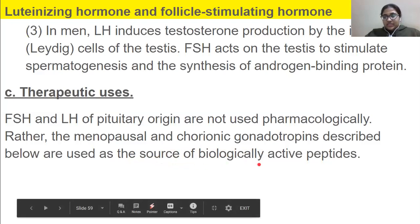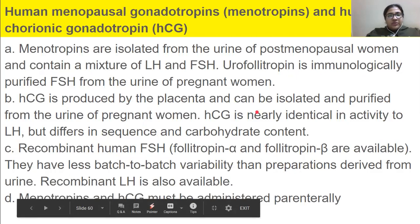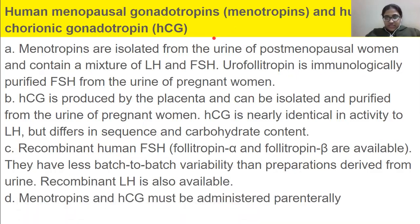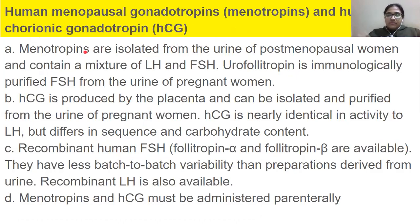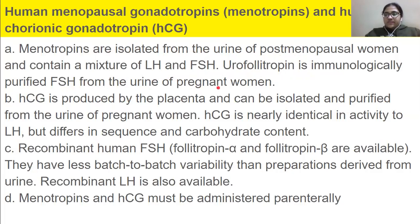Now let's talk about menotropins and HCG — these are used by ladies who want to become mothers. Menotropins are isolated from the urine of post-menopausal women and contain a mixture of LH and FSH. There is also urofollitropin, which is immunologically purified FSH from the urine of pregnant women. These formulations show how we can isolate LH and FSH for therapeutic use.